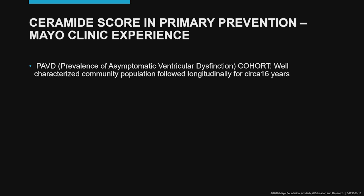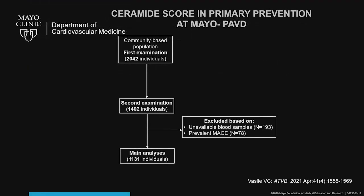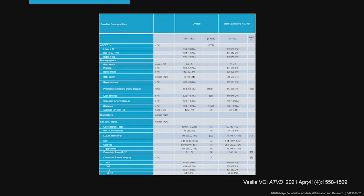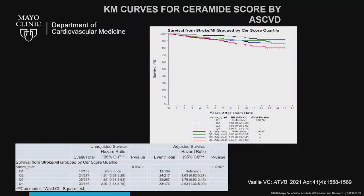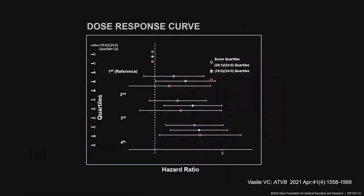I also wanted to share our Mayo Clinic experience regarding ceramide score in primary prevention. We looked at the PAVID cohort, which is a well-characterized community population followed longitudinally for approximately 16 years. These are subjects without known coronary artery disease at the time of enrollment. We looked at approximately 1,100 individuals who had a risk profile very similar to the risk profile of a white US population. The Kaplan-Meier curve shows a clear association of the ceramide score with atherosclerotic events — stroke and MI — with a hazard ratio of 2.63 for the fourth quartile and 1.63 for the second quartile, demonstrating a dose-response relationship.